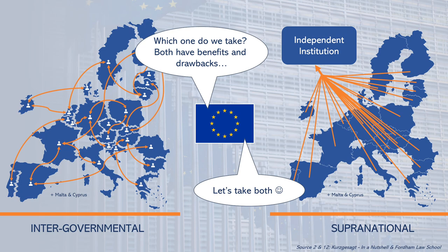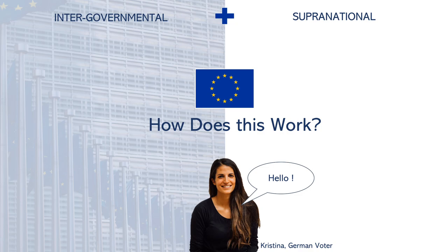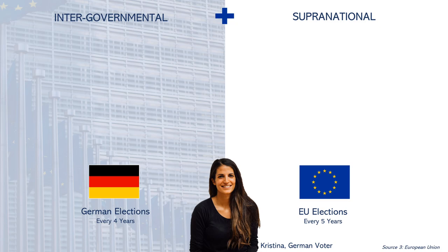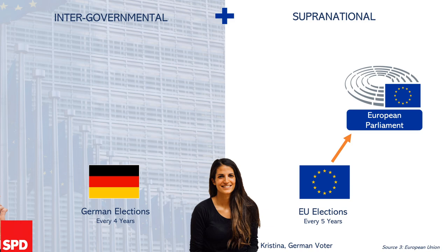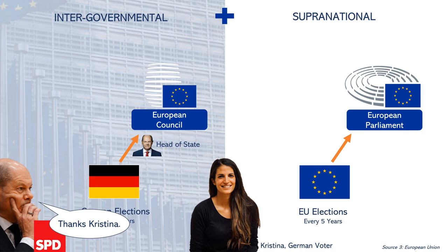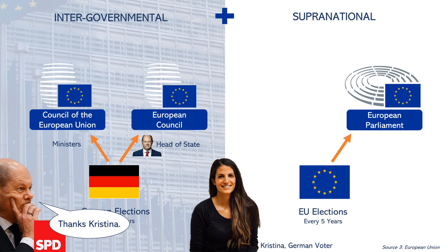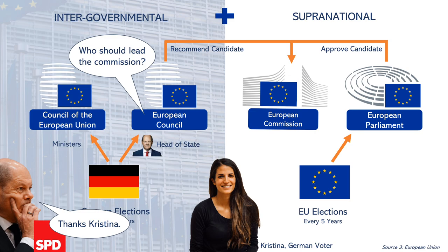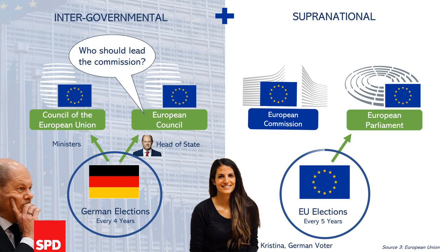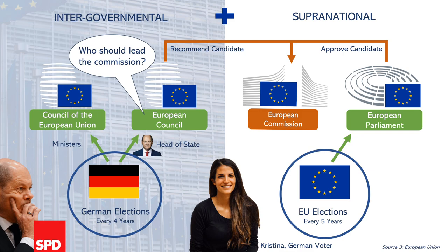Let's imagine a voter from Germany, Christina. She has a national vote every four years and a European vote every five years. Her European vote goes directly towards the European Parliament, an independent EU institution. Her national vote goes towards one of the German parties, for example the SPD with Olaf Scholz. The SPD is then responsible for sending the head of state to the European Council and relevant ministers to the Council of the European Union. The heads of state in the European Council determine a candidate for the European Commission presidency, who then needs to be approved by the EU Parliament. So Christina is directly responsible for the European Parliament and the two councils, and only has an indirect vote for the Commission.